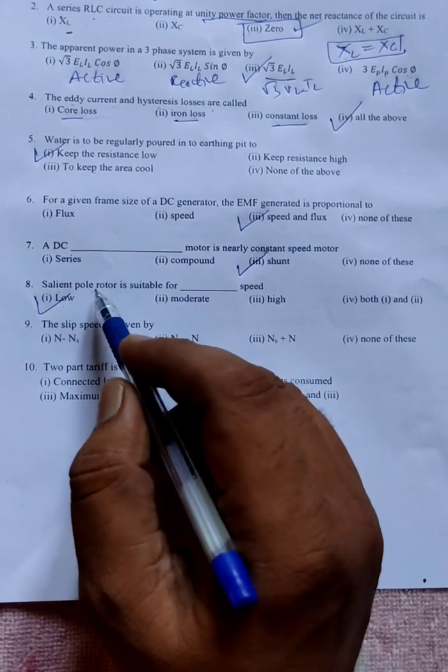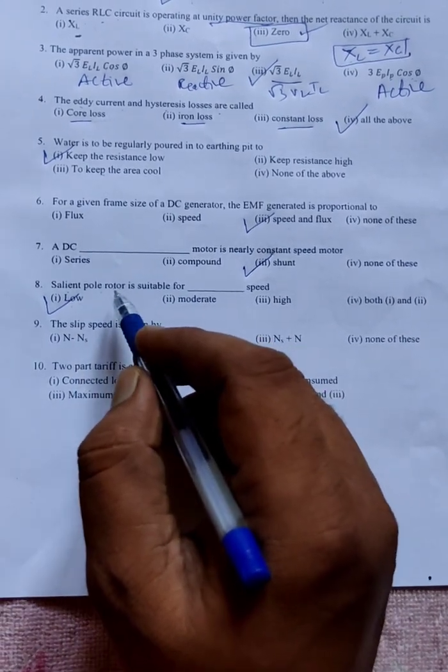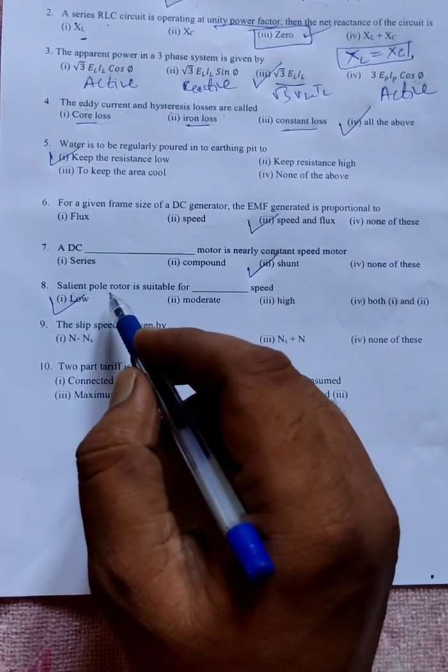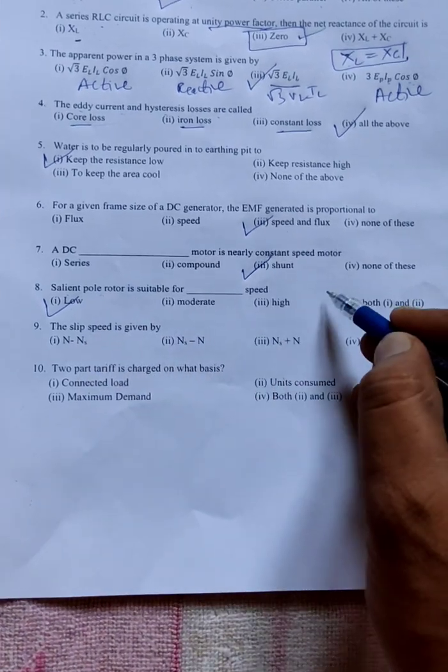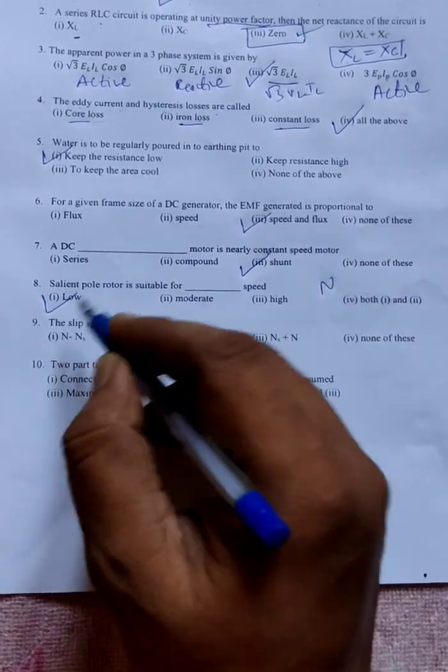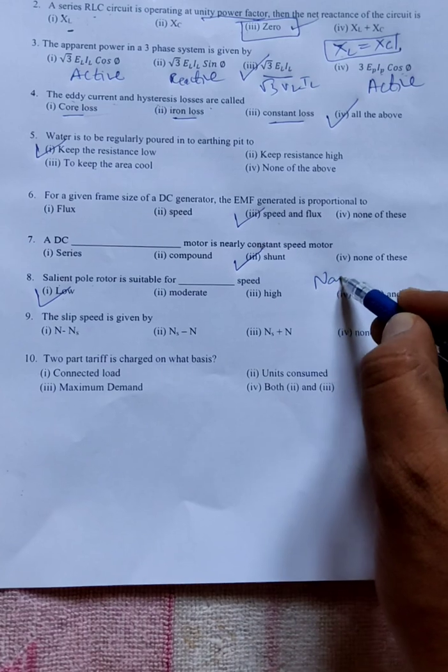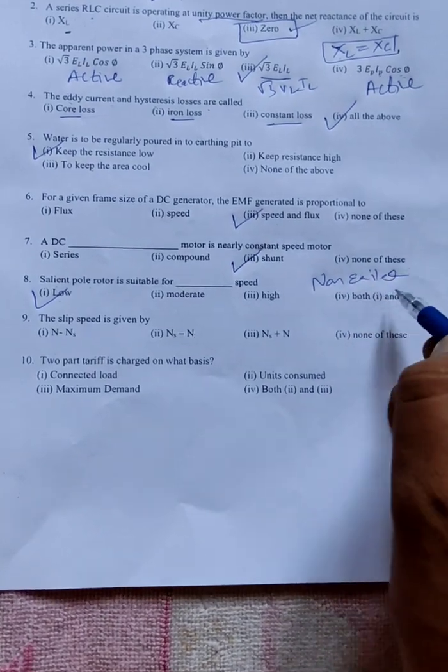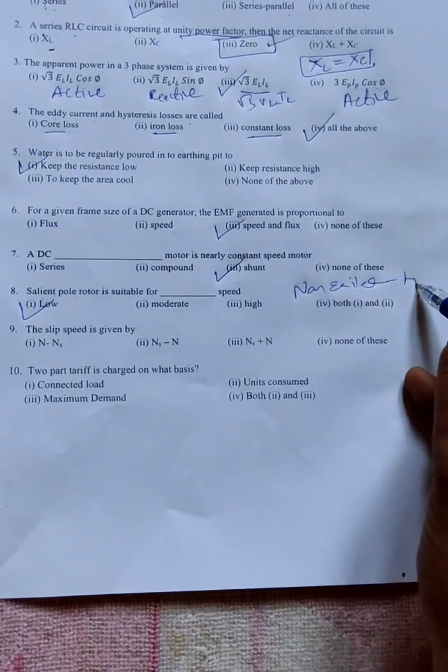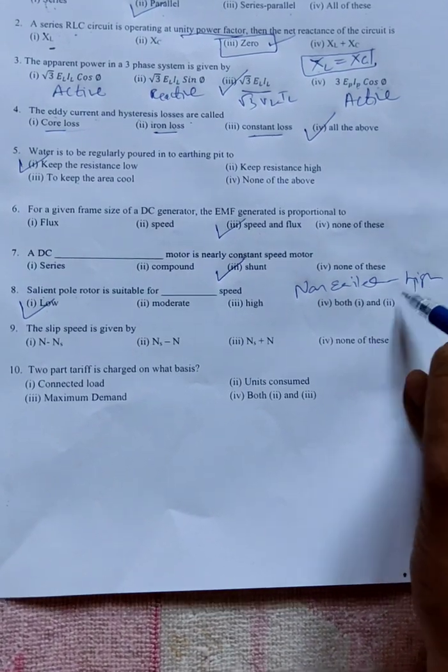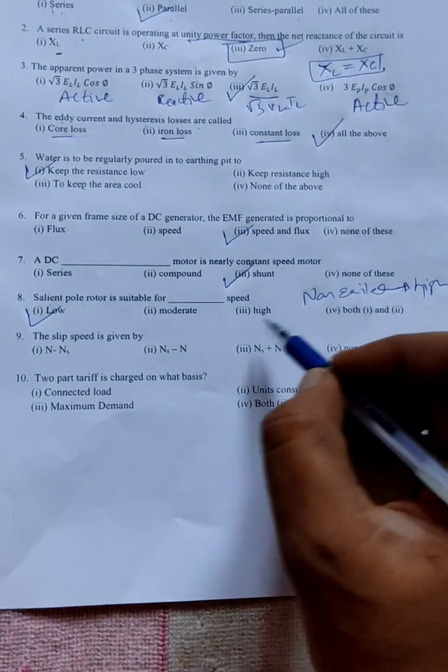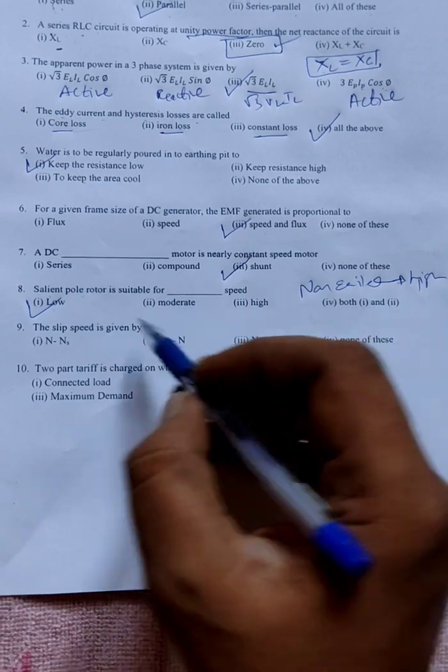Next, salient pole rotor is suitable for low speed. Salient pole alternator having more number of poles, we are using generally in hydro power plants. Non-salient - one more question is the opposite to this. Non-salient alternator is used for high speed. We can select non-salient for high speed, salient pole type rotor is recommended for low speed.